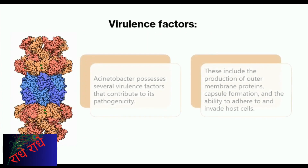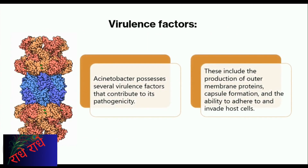Acinetobacter is a gram-negative bacterium known for its ability to cause infections in humans. It is able to cause disease by using several different virulence factors. These include producing outer membrane proteins, forming a capsule around itself, and adhering to and invading host cells. All of these factors make it particularly difficult to treat and can lead to severe illnesses.